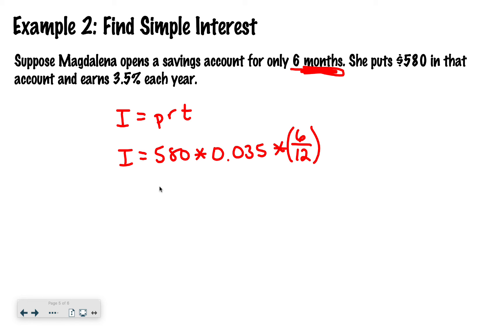So the way I'm going to type this in, I'm going to say 580 times 0.035 times. I'm going to open a parentheses, hit 6 divided by 12, close the parentheses, hit enter. And I see that it is $10.15. So I'm going to add my label. And that would be my final answer.